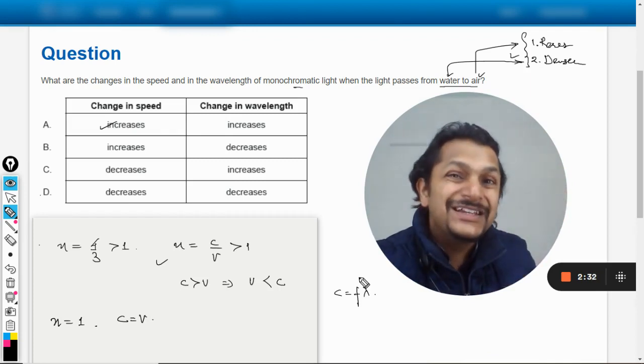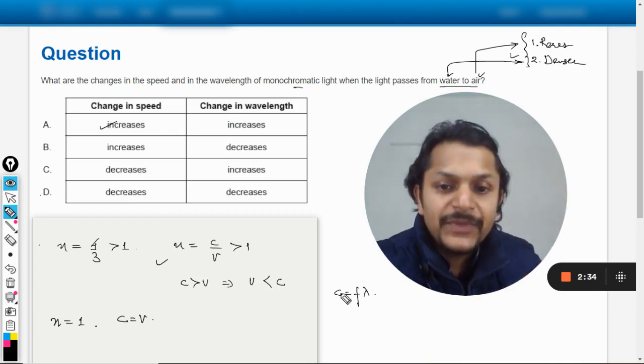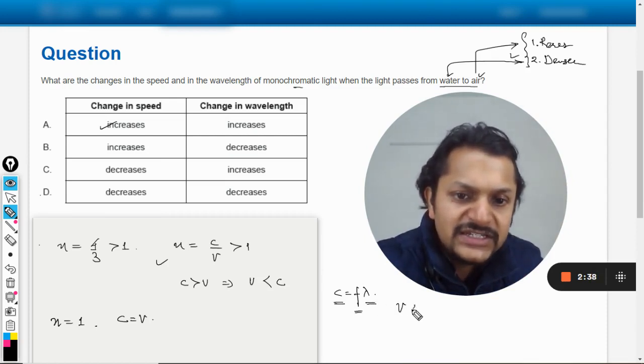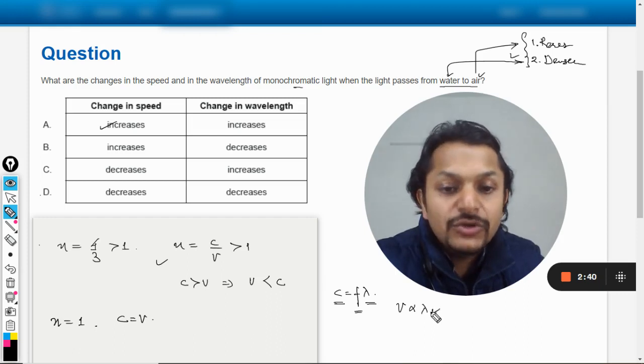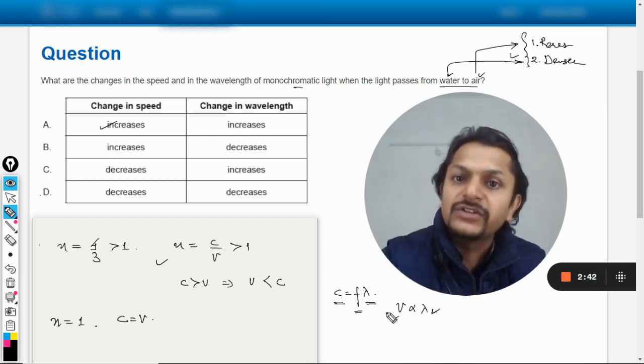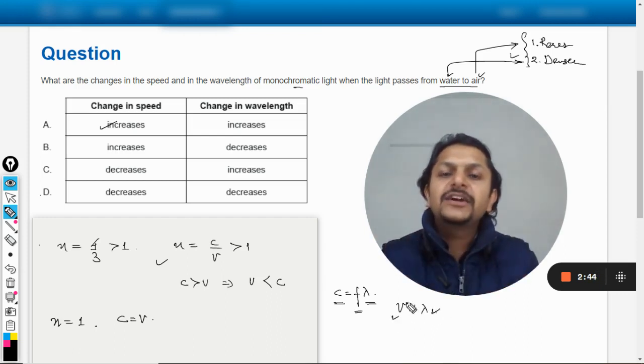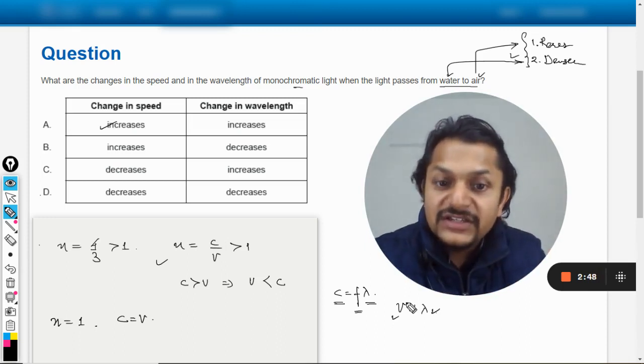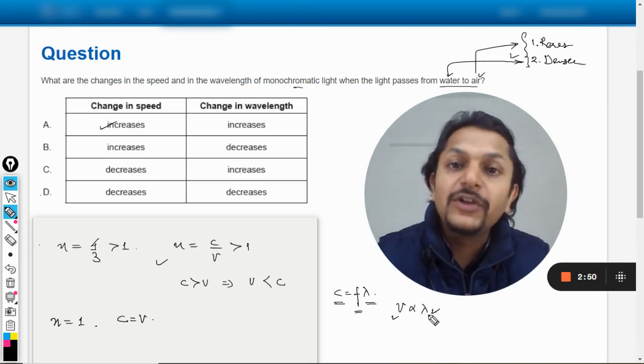So frequency does not change due to refraction. So keeping frequency constant, you can only say that the velocity is directly proportional to wavelength. So more is the wavelength, more becomes the velocity. So when the light comes out of water and goes into air, the velocity increases and it only means that the wavelength will also become bigger. So wavelength will also increase.